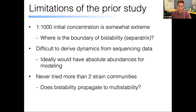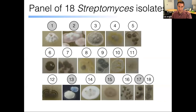There were limitations to this work that motivated a follow-up study. First, starting at a 1-to-1000 initial ratio is extreme, and we couldn't precisely determine where the boundary of bistability — the separatrix — lies. Second, our sequencing data gave relative abundances, but we ideally wanted absolute abundances for modeling. Third, we never tried more than two-strain communities, so we couldn't determine whether the pairwise bistability propagated to multi-stability. For the follow-up FEMS Microbiology Ecology paper, we reduced the number of strains, looked at more starting conditions, and decided to count the strains directly to obtain absolute abundances rather than relying on sequencing — though this was quite a laborious experiment.